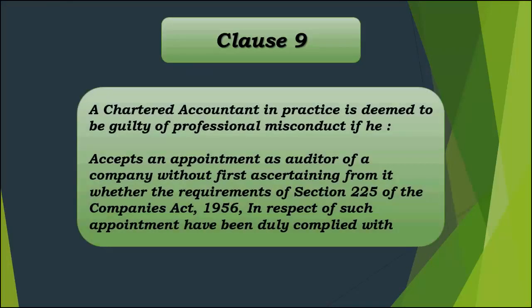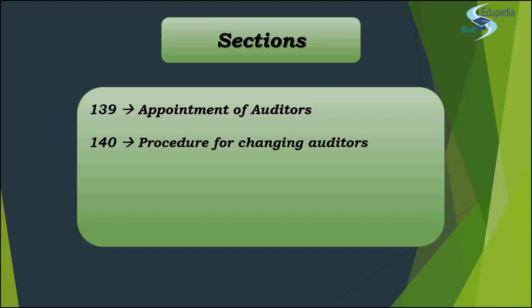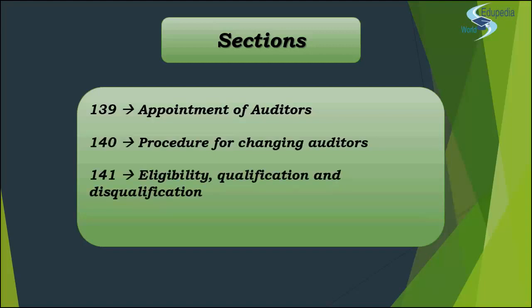In the previous lecture we discussed the text of the clause: a chartered accountant in practice is deemed guilty of professional misconduct if he accepts an appointment as auditor of a company without first ascertaining whether the requirements of Section 225, actually 224 and 224A of the Companies Act 1956, have been duly complied with. Remember these sections are now Section 139, 140, 142, read with 141. Section 139 was for appointment of auditors, 140 for procedure for changing auditors, 141 for eligibility, qualification and disqualification, and 142 for remuneration of auditors.